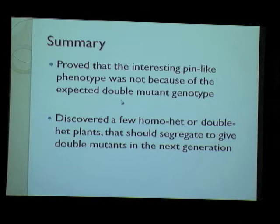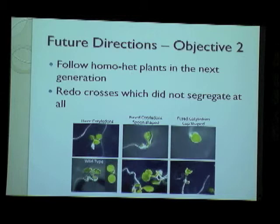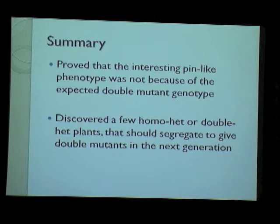One important learning from this is that even though these new phenotypes are as interesting as the pin-like phenotype we saw at the beginning, we've learned through experience not to get ahead of ourselves — we must ensure the genotyping is confirmed and the genotype is actually causing the phenotype before proceeding. In summary, we proved that the pin-like phenotype was not caused by the expected double mutant genotype, and we discovered several homo-het and double-het plants that should segregate to double mutants in the next generation.